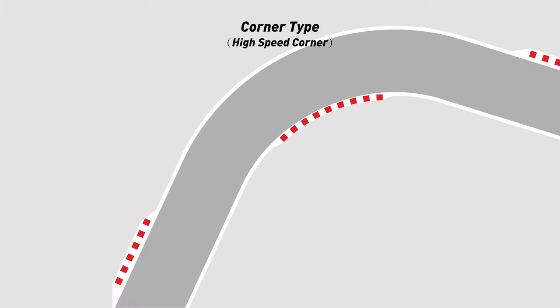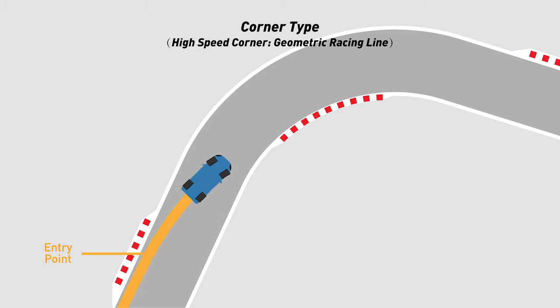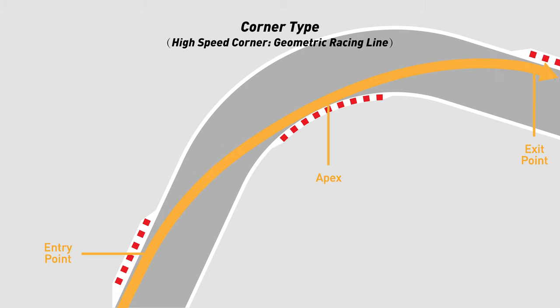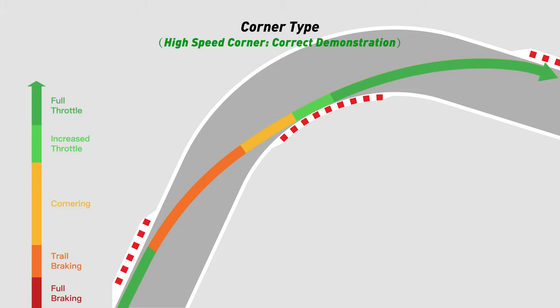Then there are the high-speed corners, which have a smaller turning angle and a longer track length. On a track with such a long distance and a small turning angle, we must pursue a racing line with the highest possible speed in the mid-corner. Here we need to choose the geometric racing line to pass the high-speed corner and let the car take the shortest cornering route. The corresponding cornering phase is shortened, and the increased throttle and full throttle phases will be earlier. By choosing this route, the car will have a higher mid-corner speed, which can bring up a higher exit speed.